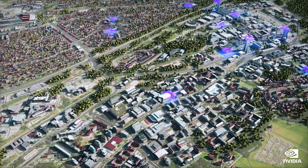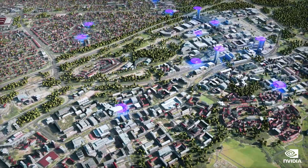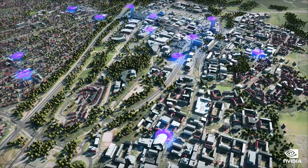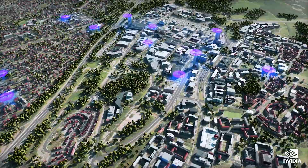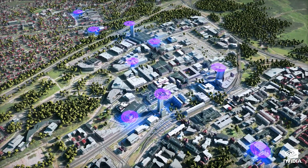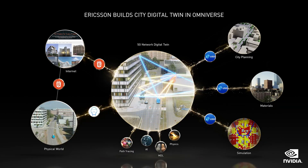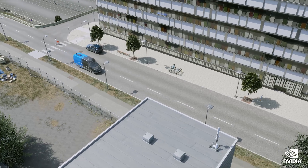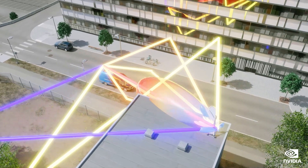In Omniverse, Ericsson can perform true-to-reality remote simulation of entire 5G networks, enabling them to design more efficient and reliable networks, conduct remote field trials, and speed up deployments. Someday, that fleet of antennas will use AI to learn the best beam forming and signal strengths, to optimize the quality of service and throughput in the city, while conserving energy.